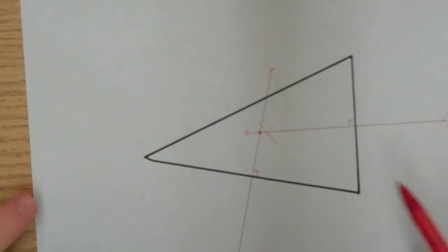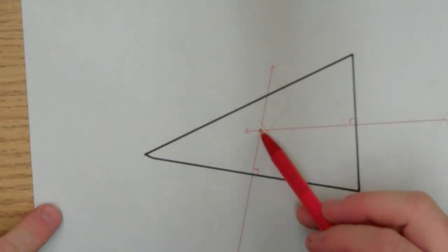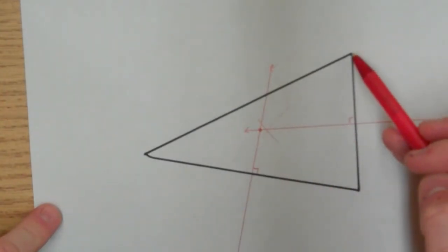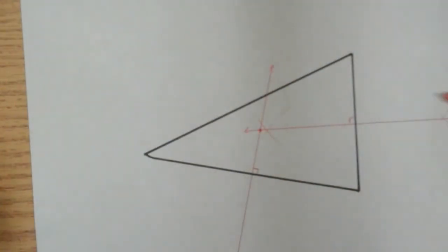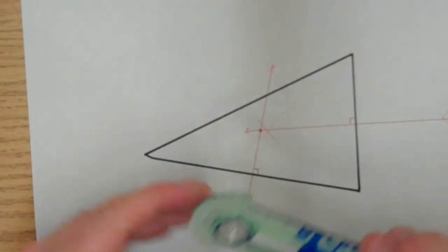So theoretically, if I did this correctly, I should be able to put the point of my compass right here, open it as far as one of the vertices, and draw a circle, and I should get a perfect circle. So let's see what happens here.